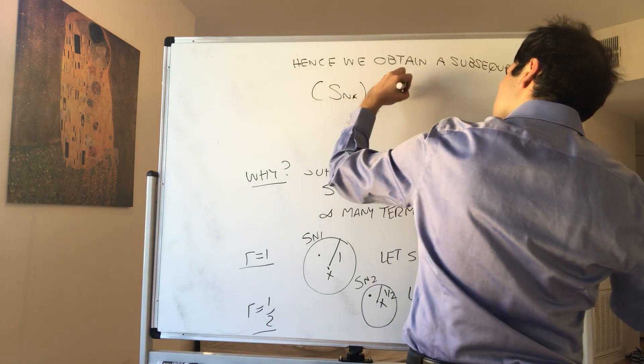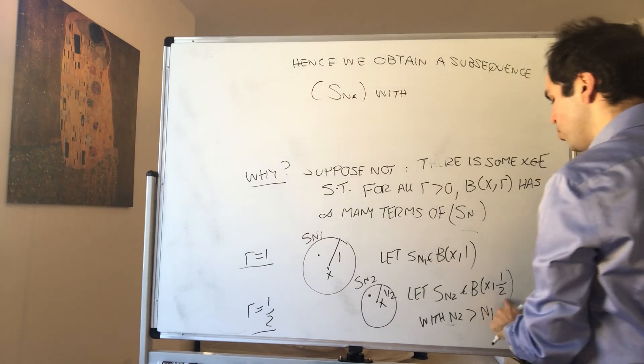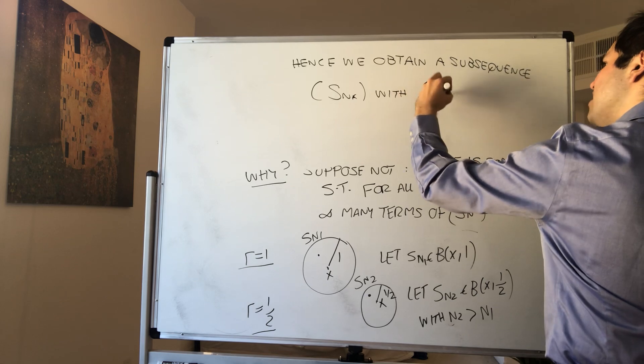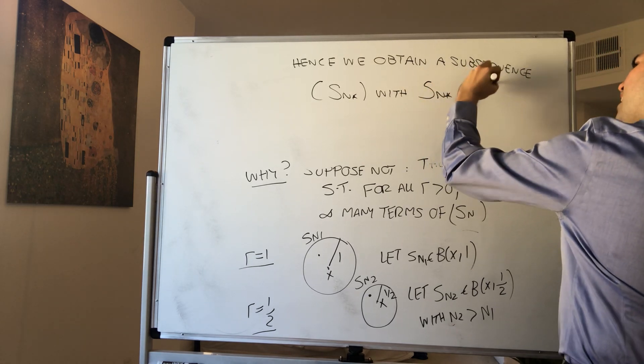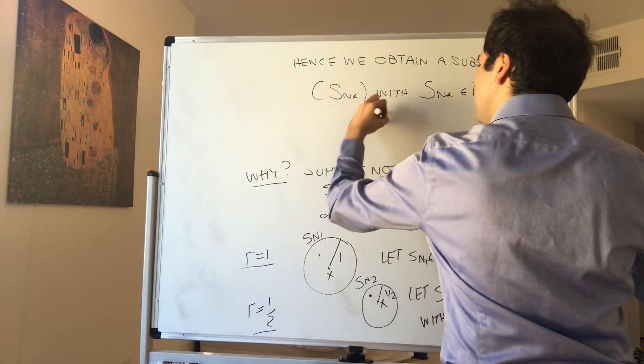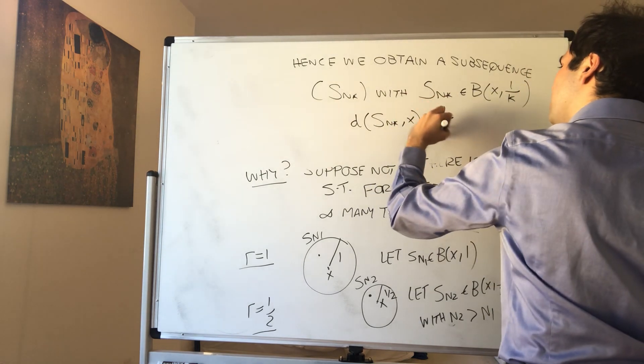With Sn1 was in B(X,1), Sn2 was in B(X,1/2), so in general, Snk is in B(X,1/k). In other words, the distance between Snk and X is less than 1/k.